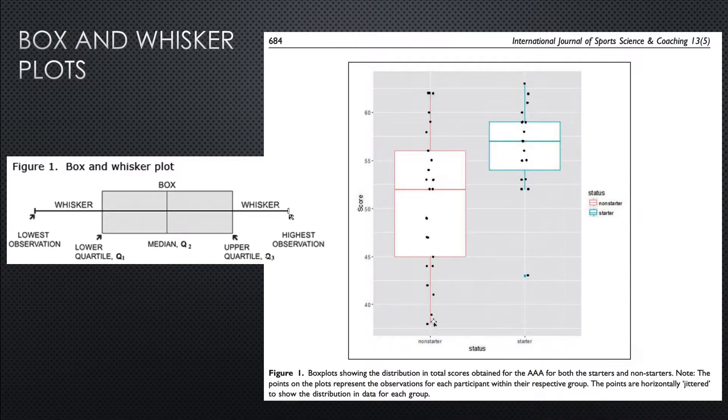So the red line shows the whisker. It shows the lowest score to the highest score. The middle line is the median.